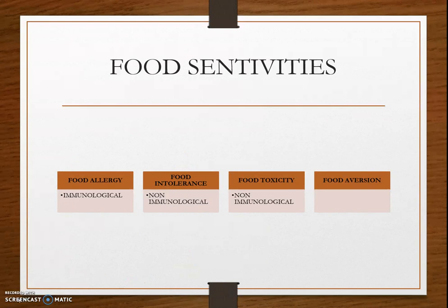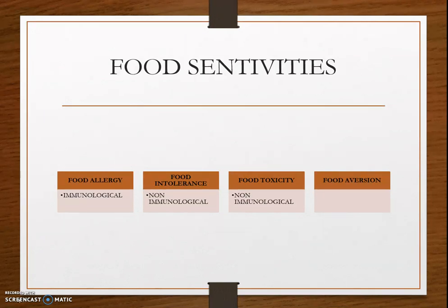Food sensitivity is a diffuse reaction to a food and it can be immunological or non-immunological in nature. Food sensitivities include food allergy, food intolerance, food toxicity, and food aversion. They sound similar but they are not the same. We will see each one in detail.